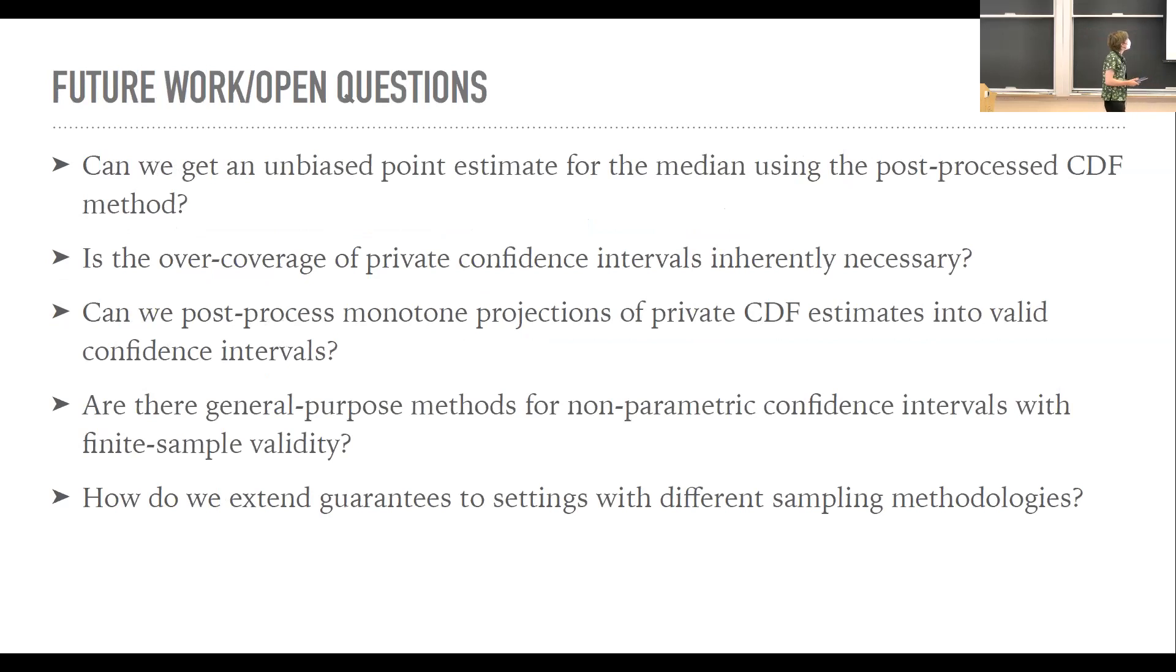Some open questions. So I don't really at least personally see a good way of getting an unbiased point estimate for the median from the exponential mechanism approach. But you might be able to get something less biased or something using all that information that the noisy CDF provides. That could be interesting. There's this general question about over-coverage of private confidence intervals. The other thing that was really tempting to do when we're thinking about the CDF was to first do some post-processing before we did the post-processing for the confidence interval where we project it to be monotone because, of course, CDF should be monotone. But once you do that, it's really unclear how to do any of this analysis. It would be interesting to know how we could leverage the fact that we know it should be monotone in our analysis. But so far, we haven't thought of anything like that.